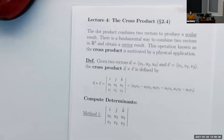But just like with multiplication of numbers, where you combine two numbers to get a number, you might expect there's something we could do to combine two vectors together and get another vector.